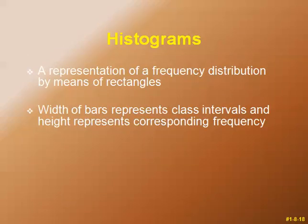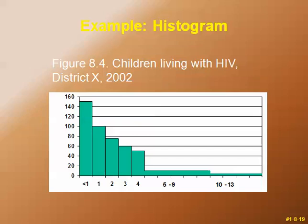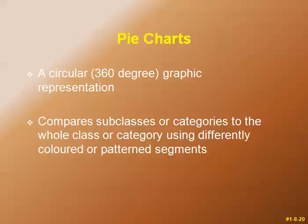Histograms are a representation of a frequency distribution by means of rectangles. The width of bars represents class intervals and the height represents the corresponding frequency. An example is children living with HIV in district X in the year 2002. The width of the rectangles represents the age classes — for example, less than 1 year, 1 to 2 years — while the height represents the frequency of children affected by HIV.